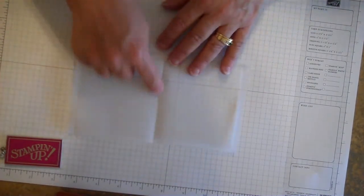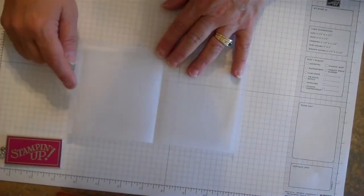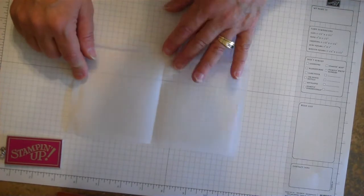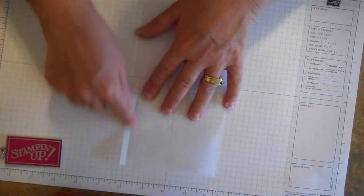So you're scoring at 4 inches, a quarter inch on the short side, a quarter inch on the other short side and a quarter inch on the long side.